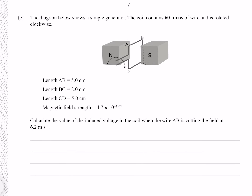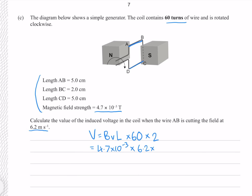Question C. The diagram below shows a simple generator. The coil contains 60 turns of wire and is rotated clockwise. We have the same lengths and magnetic field strength. Calculate the induced voltage in the coil when wire AB is cutting the field at 6.2 meters per second. Using V = BvL, but this only gives the voltage for one turn, so we multiply by 60. Furthermore, not only does AB produce voltage but also section DC, so we have two lots of 60 turns. With B = 4.7 × 10⁻³, v = 6.2, and L = 0.05 meters, that gives 0.17 volts to two significant figures.